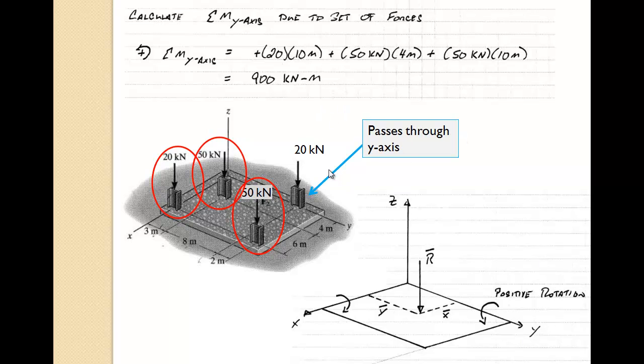Now the 20 kilonewton load here that's located on the y-axis passes through the y-axis, so it produces no moment about that axis, whereas the other 20 kilonewton load is at a distance of 10 meters.